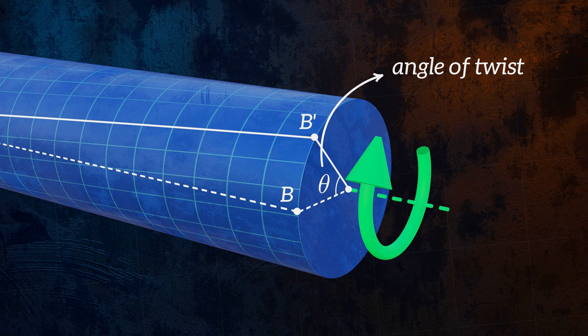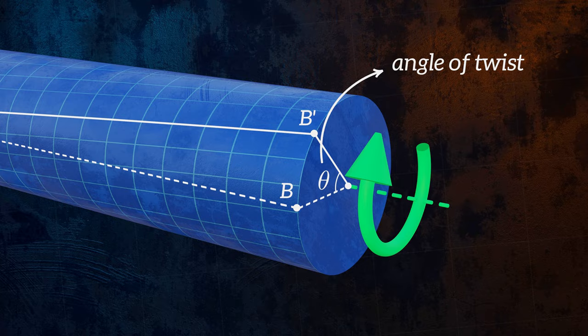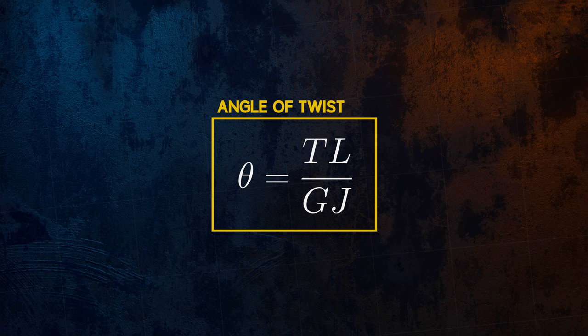It varies linearly from 0 at the fixed end of the bar to phi at the free end of the bar. We can calculate the angle of twist using this equation. It is a function of four parameters: the length of the bar L,